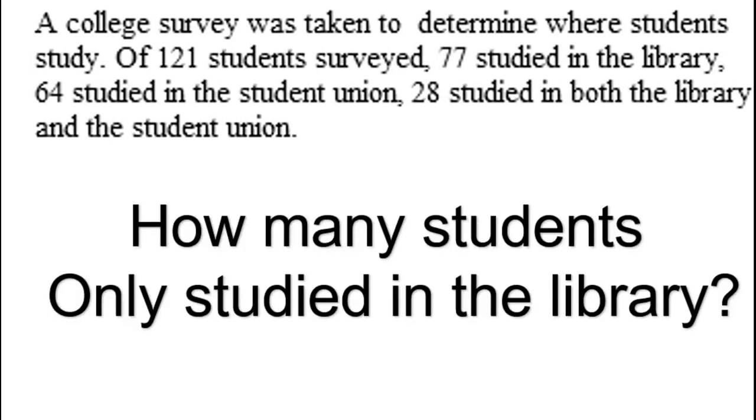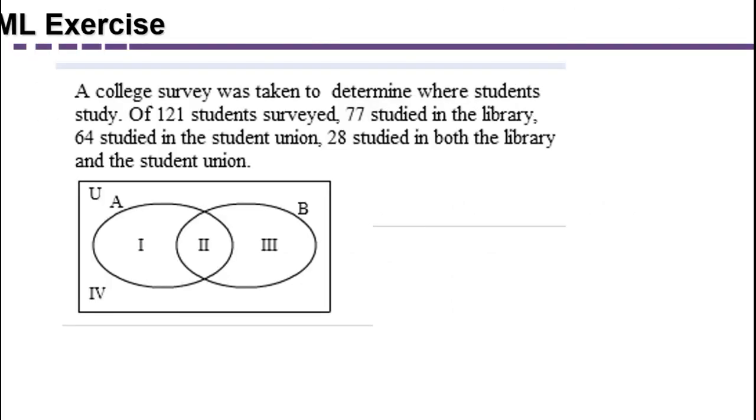Given that raw data, we might ask how many students only studied in the library. One way to approach that would be to set up a Venn diagram. We would need to decide what each set was going to represent and how many items were in each set, how many students.